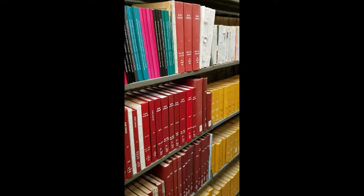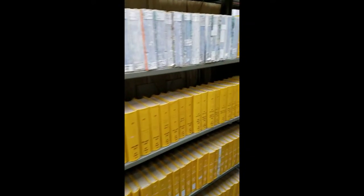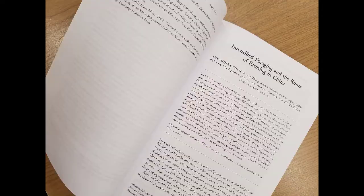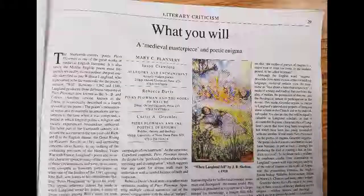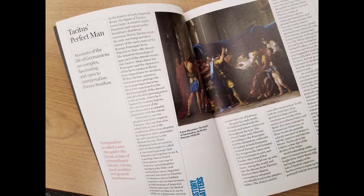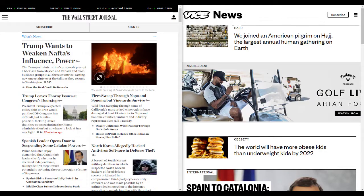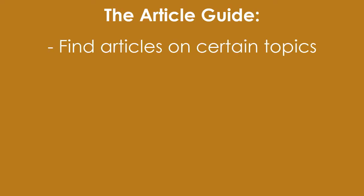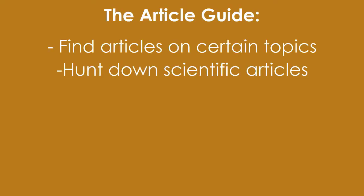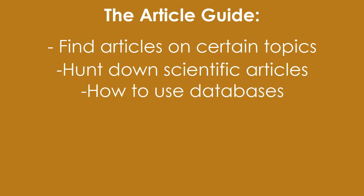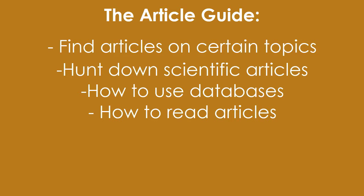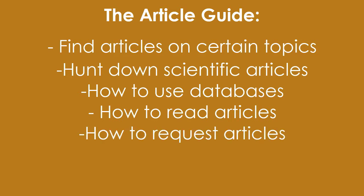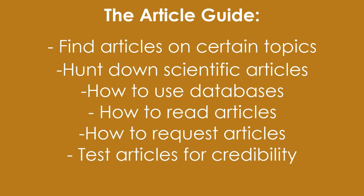Also, articles offer a wide variety. You can have results from studies, people analyzing studies, opinions, reports, and more. Of course, this is where you'll need to be careful — some articles are going to be better sources than others. But that's what this guide is for. We'll show you how to find articles on certain topics, hunt down scientific articles, use databases and other online sources to get articles, read articles, request articles, and even help you test your articles to see how reliable they are.